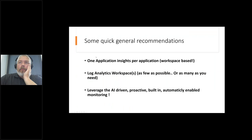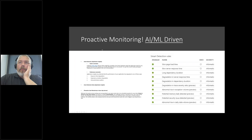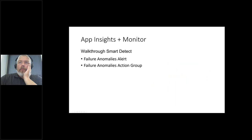Recommendations: one Application Insights per application, think about the workspace, and log analytics — as few as possible or as many as you need. Leverage the AI-driven, automatically enabled monitoring. Since it's automatically enabled, you need to be aware of where and how it's enabled. The proactive smart detection covers slow page load time, response time, and some preview features like potential memory leak detection — it looks at failure anomalies and performance anomalies.